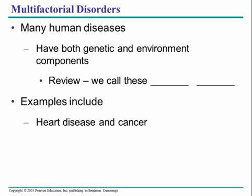A lot of human diseases have both genetic and environmental components. Heart disease, cancer, and almost every single disease we can attribute to humans — many of them have environmental components that play a role. Maybe cystic fibrosis and Huntington's do not — they're largely or only genetic — but many diseases are both genetic and environmental in how they progress.